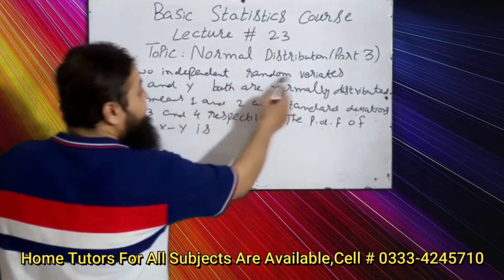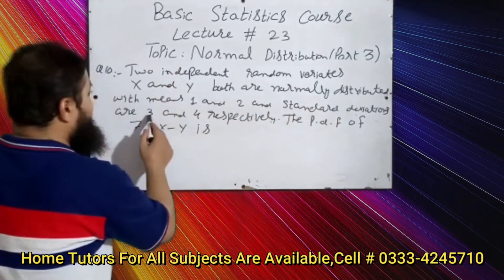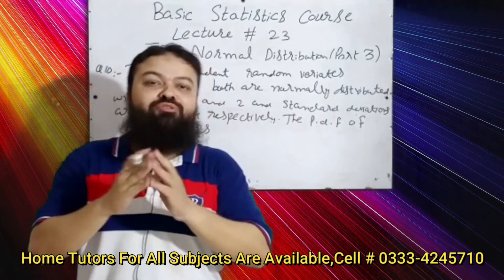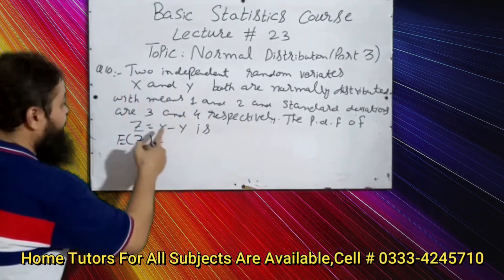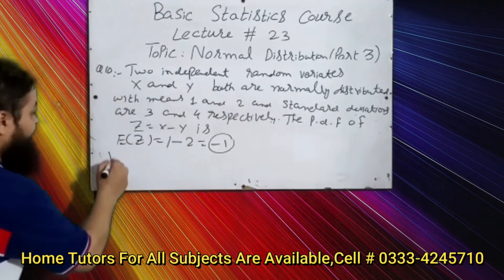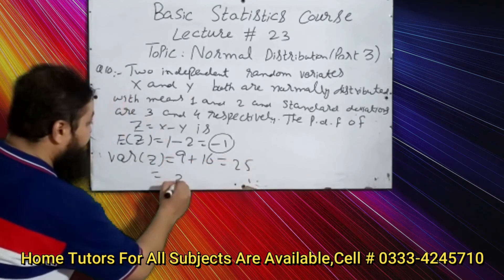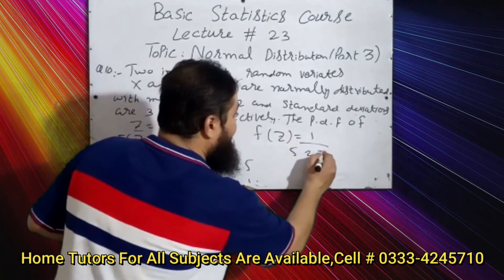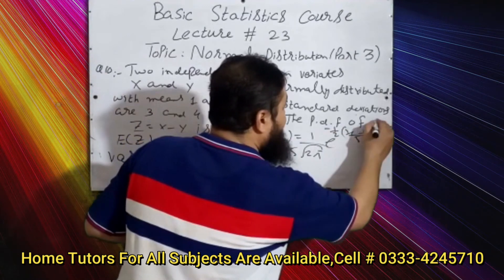Question number ten: two independent random variates X and Y are normally distributed with means 1 and 2 and standard deviations 3 and 4 respectively. Find the PDF of Z = X − Y. E(Z) = E(X) − E(Y) = 1 − 2 = −1. Var(Z) = Var(X) + Var(Y) = 9 + 16 = 25, so σ_Z = 5. The PDF of Z is: (1 / (5√(2π))) · exp(−(1/2)·((x − (−1))/5)²).